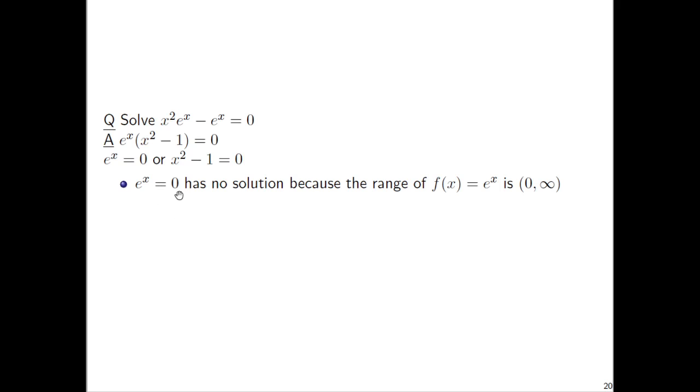We're solving an equation by appealing to looking at a function that we're cooking up on the spot and saying that function has range bigger than 0. So there's no way that the value of e to the x equals 0. The other equation is x squared minus 1 equals 0 and if you add 1 to both sides and square root both sides you'll get x equals plus or minus 1.